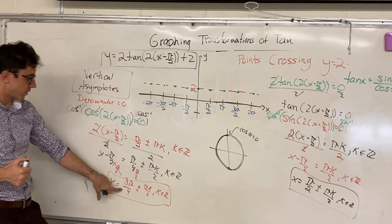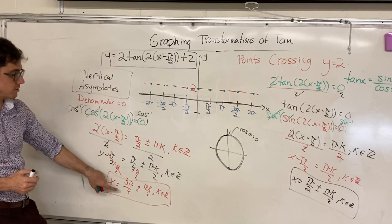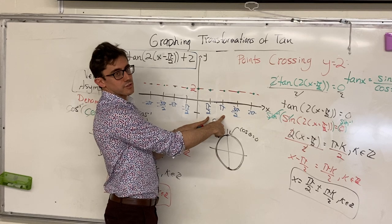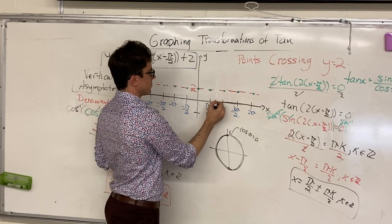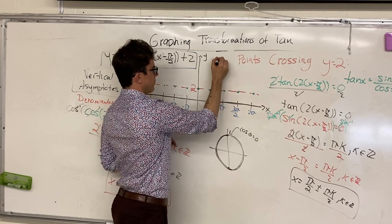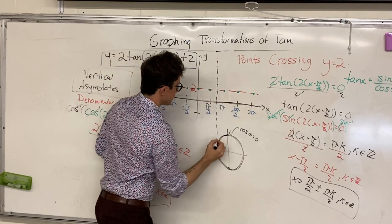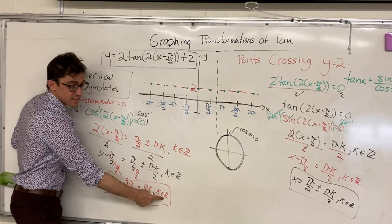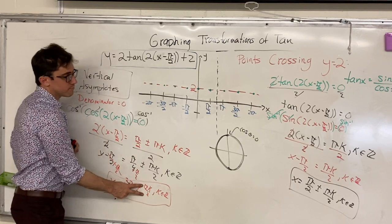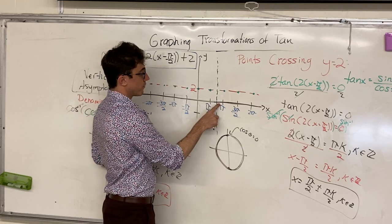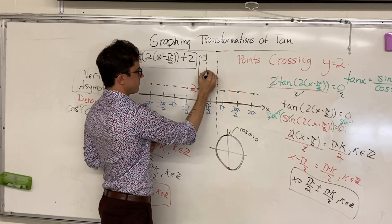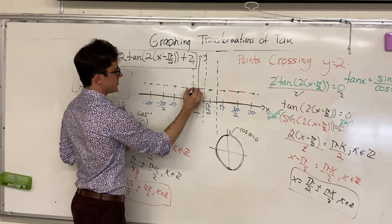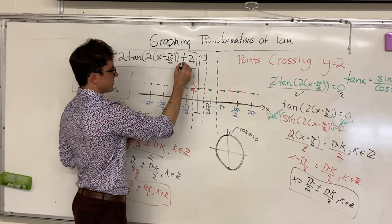Let's go ahead and graph our first vertical asymptote at 3π over 4. 3π over 4 is smack in the middle of π over 2 and π, so somewhere around here we get our first vertical asymptote, and then every integer multiple of π over 2 apart: π over 2 before 3π over 4 is right here, and then π over 2 to the left, and you start to see a pattern.